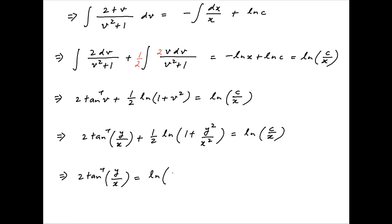In other words, 2 times tan inverse y upon x is equal to ln of c upon x minus half of ln of x squared plus y squared upon x squared.